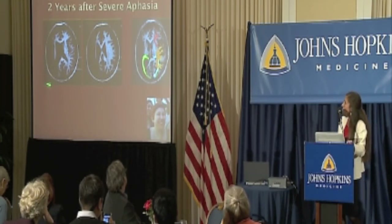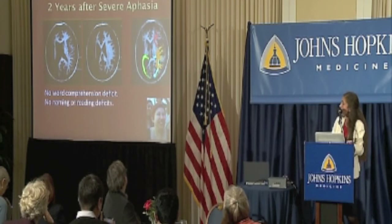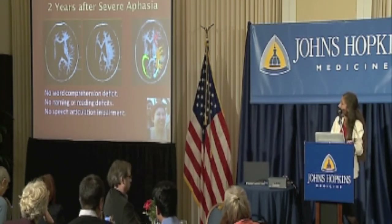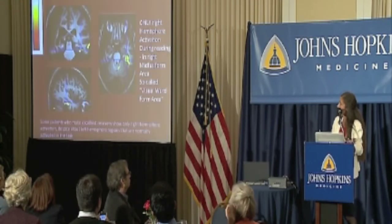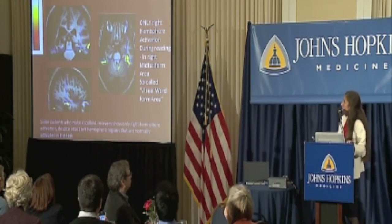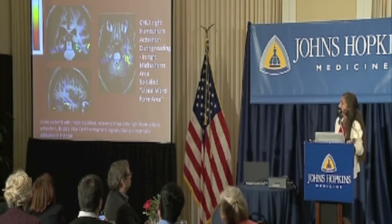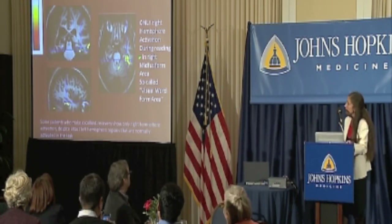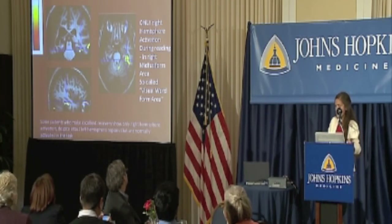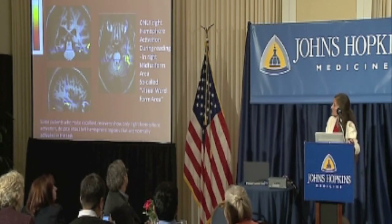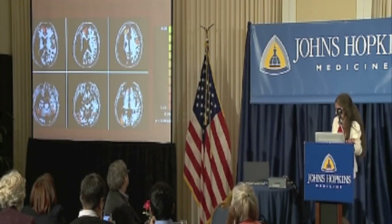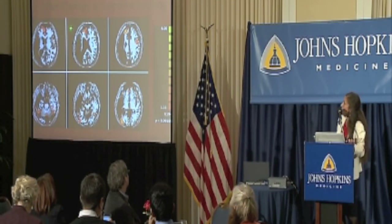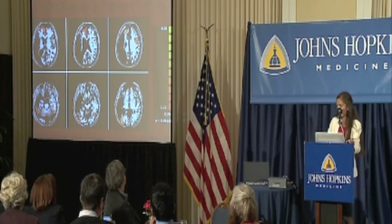It turns out spelling and writing are the one thing the right hemisphere can't recover very well. The patient who had the huge stroke recovered amazingly well — no word comprehension deficit, no naming or reading difficulty, no speech articulation impairment — but he had a severe spelling impairment. When we looked at language, even in reading, he used mostly his right hemisphere. However, after receiving rehabilitation for spelling, he began to use his left hemisphere — the tiny remaining areas — which took over spelling.